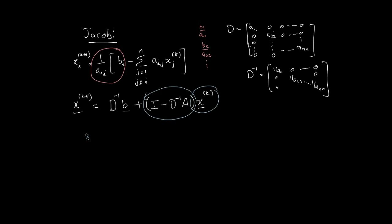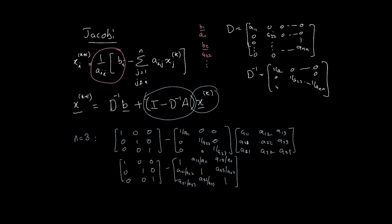So for instance, when N is equal to 3, our situation is something like this. We have the identity matrix, 3 by 3. This is just for demonstration purposes. And we have 1 over A11, 0, 0, 0, 1 over A22, 0, 0, 0, 1 over A33. And that is multiplied by A11. So we have this situation. Now, when we multiply these two together, we get this.